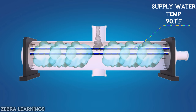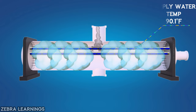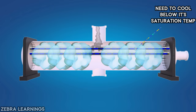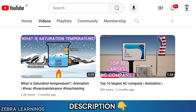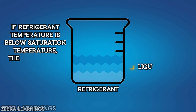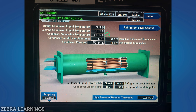If the refrigerant remains in vapor state, it will increase the pressure in the condenser, which can lead to chiller surge. To convert the refrigerant from vapor to liquid, we need to cool it below its saturation temperature. If the refrigerant is above its saturation temperature it will be in a vapor state; if below, it will be in a liquid state. The saturation temperature of the refrigerant can be known through the display of the chiller.